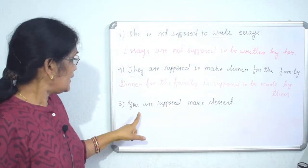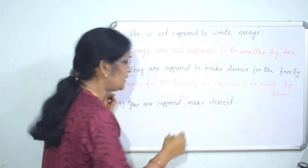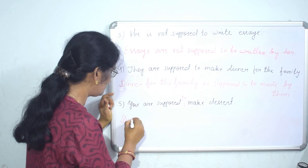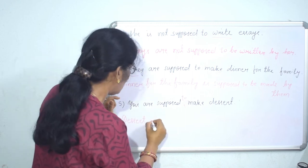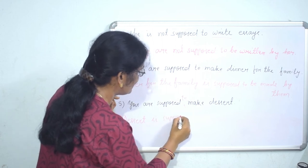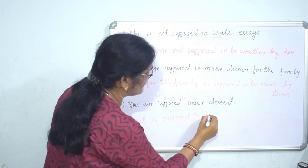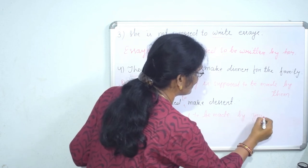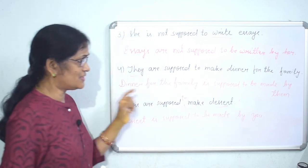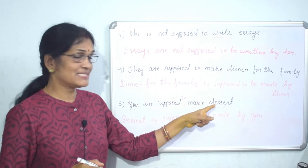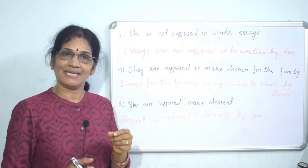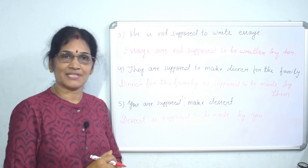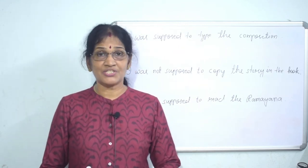Next: 'You are supposed to make dessert.' Make what? Dessert. So dessert will be the subject in passive. Note on spelling: 'dessert' is spelled D-E-S-S-E-R-T, and 'desert' is spelled D-E-S-E-R-T — two different words. To get the clear concept, go to the link given in the description box. So the passive is: 'Dessert is supposed to be made by you.'